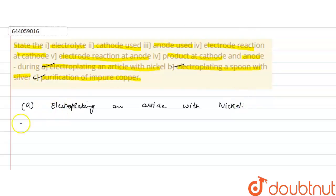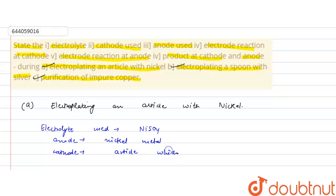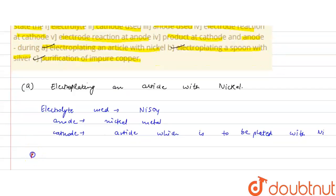For electroplating an article with nickel, the electrolyte used is nickel sulfate (NiSO4). The anode is made up of nickel metal, and the cathode is the article which is to be plated with nickel.